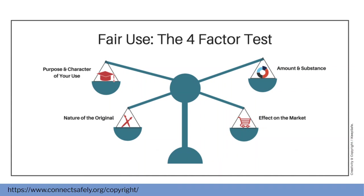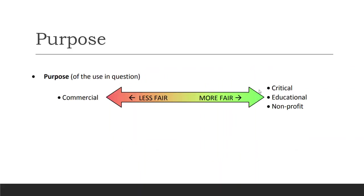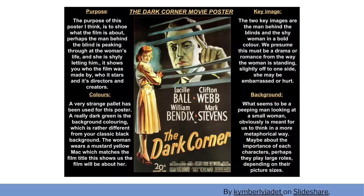Each of these factors is kind of a range you have to consider. The first is the purpose of the use — why am I using this? If I'm using it for commercial purposes, it's not as fair. Whereas if it's educational, nonprofit, or a critical use, it is more fair. A critical use means we're using it to share a different idea. For example, maybe this movie poster is copyrighted, but when I put it on here and add content explaining the movie poster, that makes it more of a fair use.